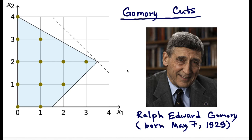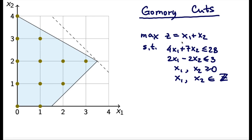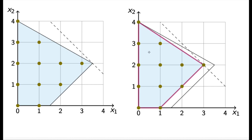We'll illustrate the ideas of Gomory cuts using a simple two-dimensional example. We have the formulation: maximize x1 plus x2, subject to 4x1 + 7x2 ≤ 28, 2x1 − 2x2 ≤ 3, with both variables non-negative and required to be integer. In an ideal formulation, we'd like the LP relaxation to coincide with the convex hull of the feasible integer points — a perfect formulation — which is what we are trying to achieve by improving the quality of the formulation.